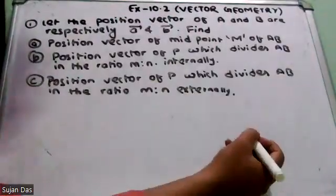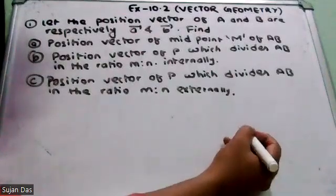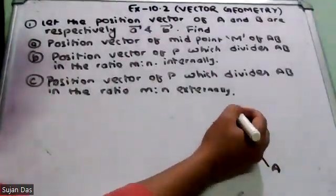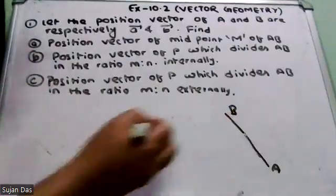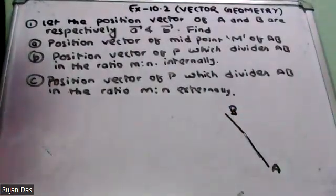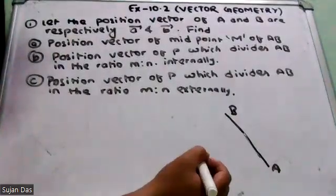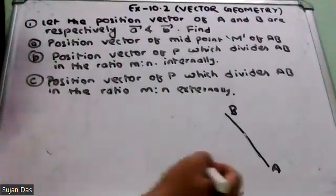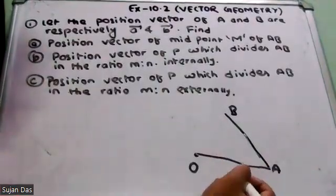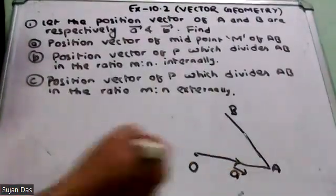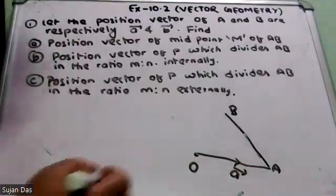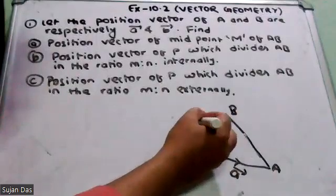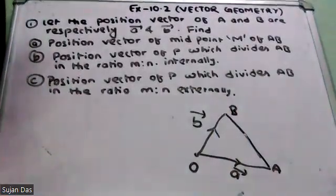So A and B are points. The position vector of O to A — OA vector — is small a vector. Similarly, the position vector of B is small b vector.